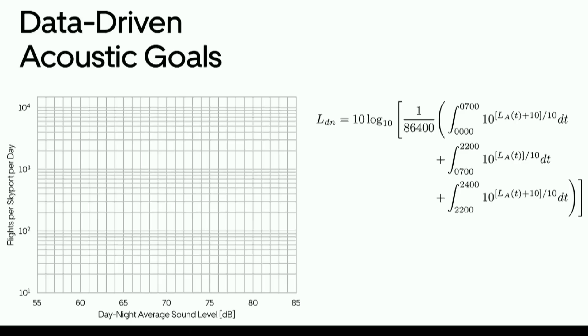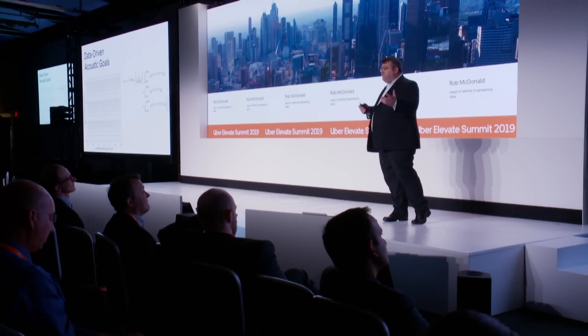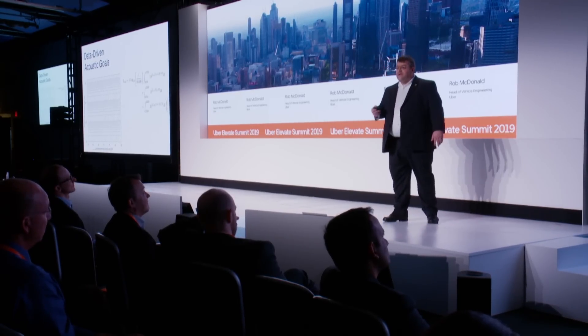We're going to be using more advanced metrics, but for now, for the conversation we're having, DNL will suffice. We've talked a number of times about being 15 dB quieter, but we've never really told you why we think that was the number. DNL is the average A-weighted sound level over a 24-hour period, and it has penalties in it for the early morning and late night. The important part about DNL is it's cumulative — it captures the effect of multiple events, not just one flyby, but throughout that day and that night.